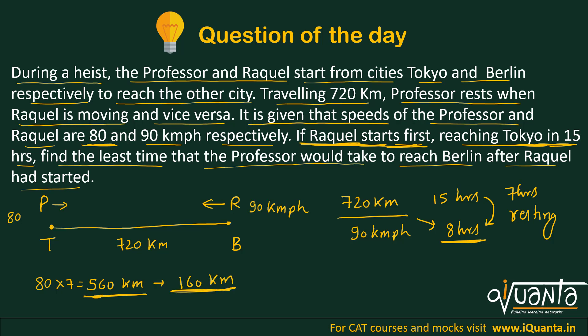So the professor has to cover 160 kilometers more. He is running at 80 kmph, so he will take 2 hours more. So Raquel reaches Tokyo in 15 hours, and after those 15 hours are finished, the professor will take 2 hours more to reach Berlin. So 15 plus 2, that means 17 hours will be the minimum time taken by the professor to reach Berlin.